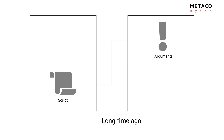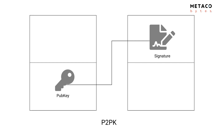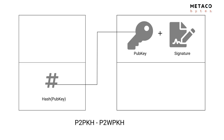So this model was changed — scripts were constrained to several specific kinds. One of those constrained script types was called P2PK. Instead of having any script inside the output, you can now only have a public key. To spend this output, you need to deliver a signature valid under that public key.